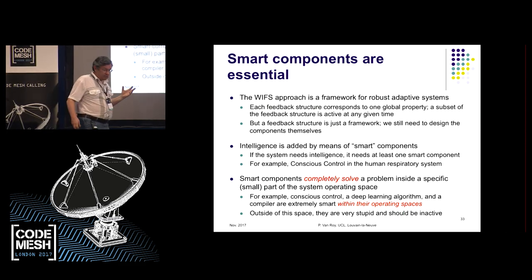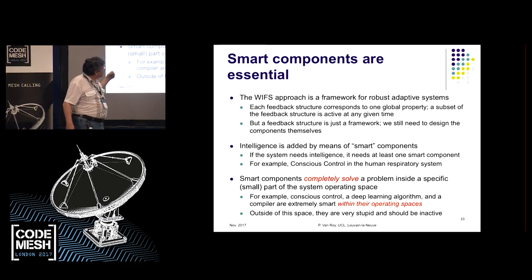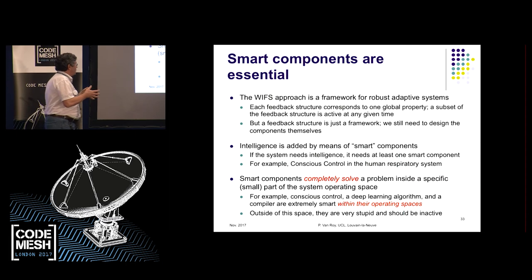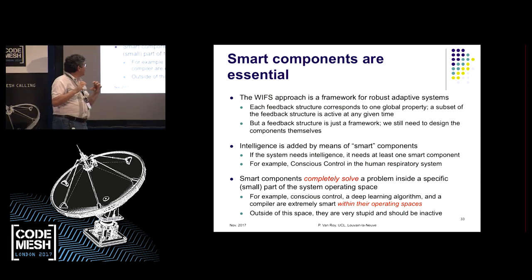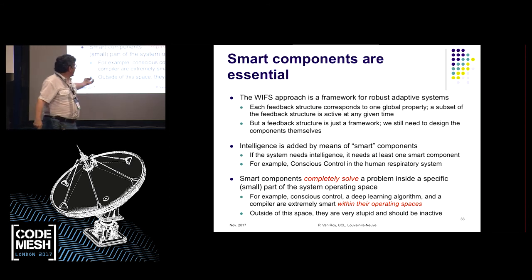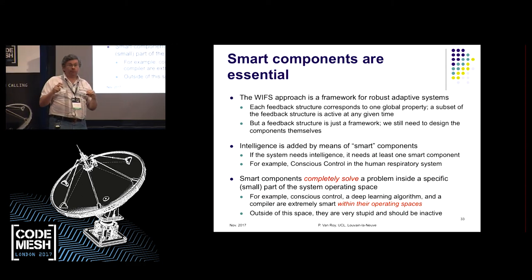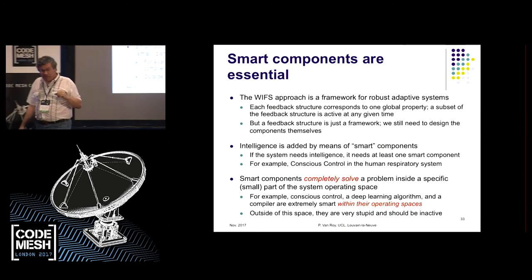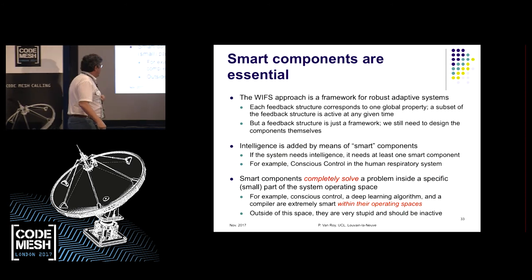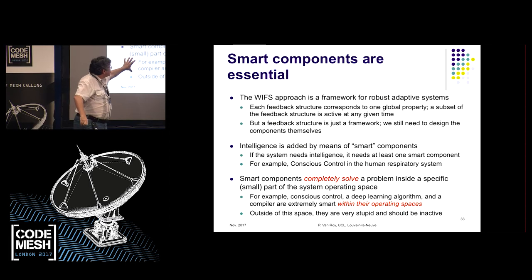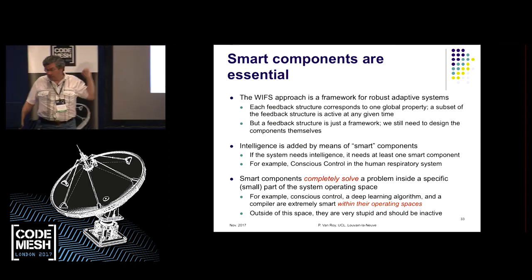The framework provides adaptiveness and resilience, but not intelligence. If you want intelligence, you have to put in what I call smart components — some of the components in some of the feedback structures have to be smart. The conscious control in the human respiratory system is an example of a smart component. A smart component is one that completely solves a problem in a small part of the system's operating space, but only in that part. A deep learning algorithm can be extremely smart when detecting images of birds, but show it a cat and it has no idea. Outside of its space, it's very stupid — so it has to be managed by the rest of the feedback structure.